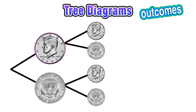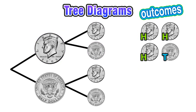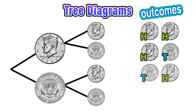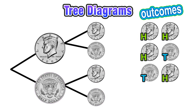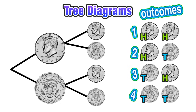One outcome is heads on the first flip and heads on the second flip. Another is heads on the first flip and tails on the second flip. You could also get tails on the first flip and heads on the second flip. Or you could get tails on the first and second flip. We see here that we have one, two, three, four possible outcomes for this scenario of flipping a coin twice in a row.